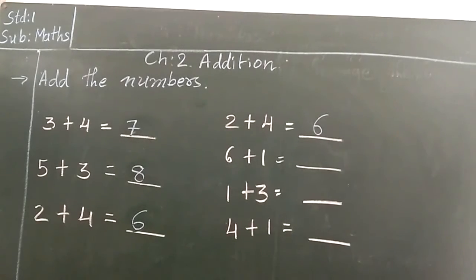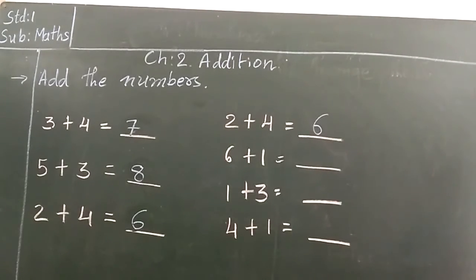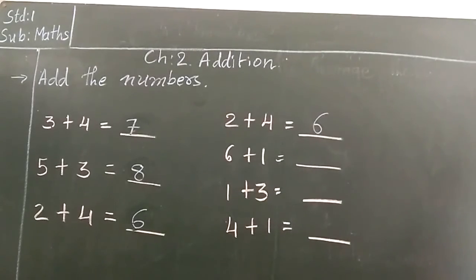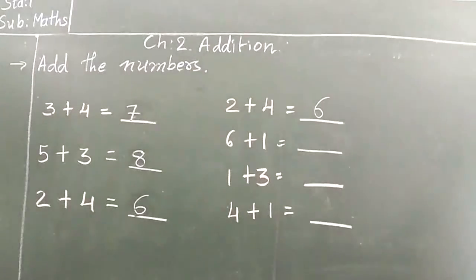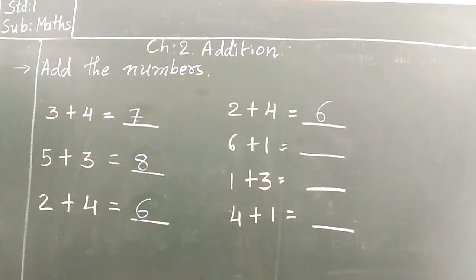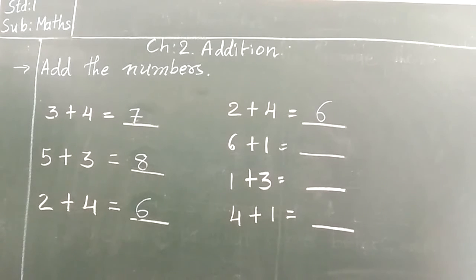Now 6 plus 1. See we have to use both the hands. Because we have only 5 fingers on one hand. So what we have to do? We will have to take one finger from another hand and we will have to add 1. So 1, 2, 3, 4, 5, 6. And we have to add 1. Means 7. So 6 plus 1 is 7.